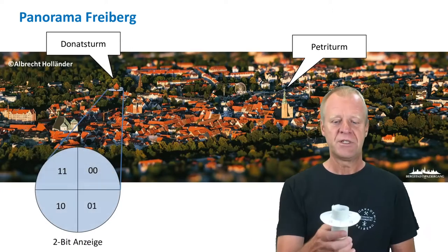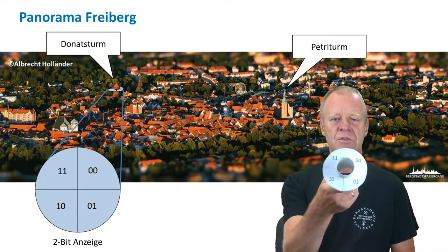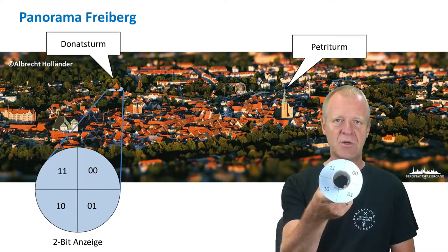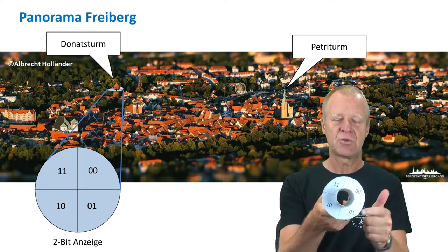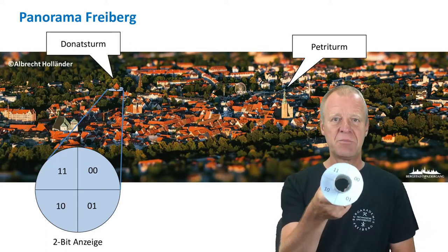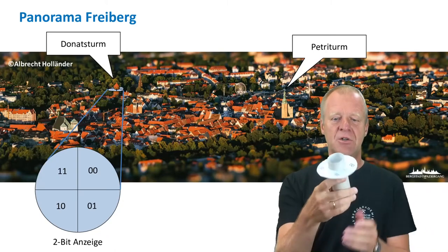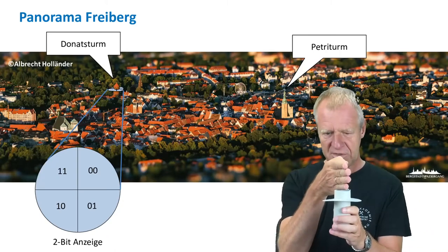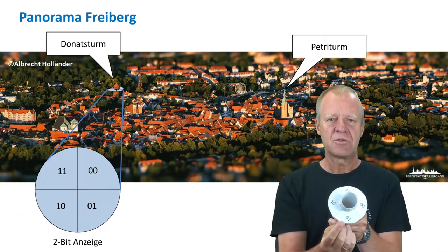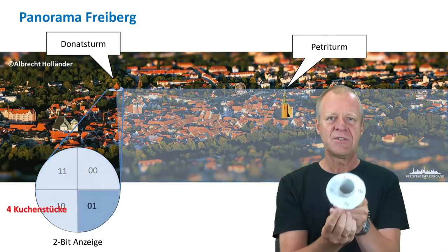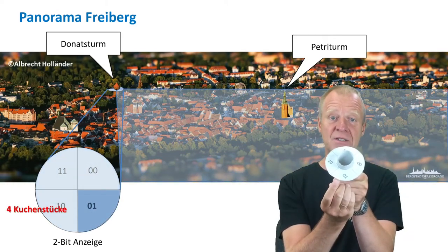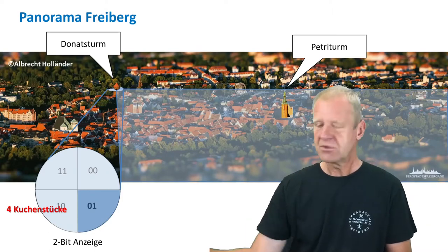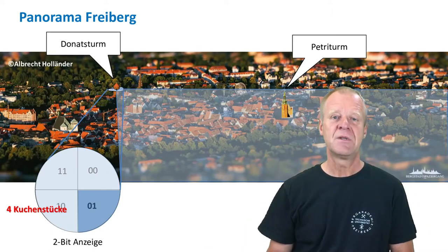We can imagine such a ring around the Donuts Tower divided into four sectors. By using two bits, we can provide different names for the different sectors. We can now look from the Donuts Tower in the direction of the Petri Tower. So for this example, we can say the Petri Tower lies in the sector 01.